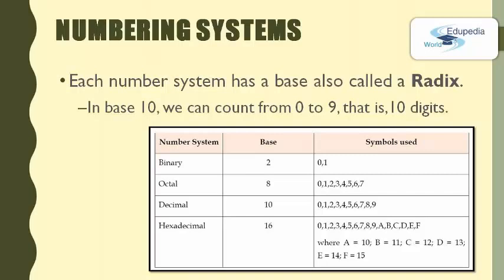Apart from those two there are two other numbering systems. For the octal number system the base is 8, and for the hexadecimal numbering system the base is 16. The reason for varying bases lies in what happens when we count up to the maximum number that the numbering system allows. For example, in base 10 we can count from 0 to 9, that is 10 digits. This table summarizes the base of each number system and the symbols each system can use.